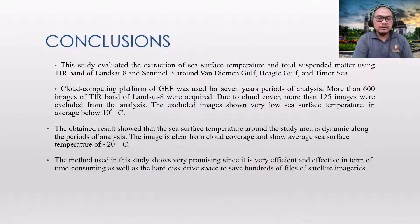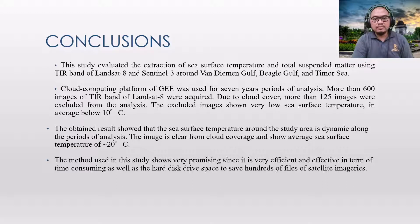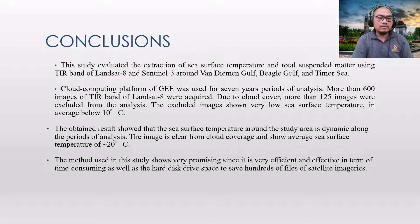In conclusion, this study evaluated the extraction of sea surface temperature and total suspended matter using thermal infrared bands of Landsat 8 and Sentinel-3 around Van Diemen Gulf, Beagle Gulf, and Timor Sea. The cloud computing platform of Google Earth Engine was used over a seven-year period. More than 600 images were acquired; due to cloud cover, more than 125 images were excluded. The remaining results showed very dynamic sea surface temperatures averaging around 20 degrees Celsius. The method is very promising in terms of time efficiency and hard disk space savings.